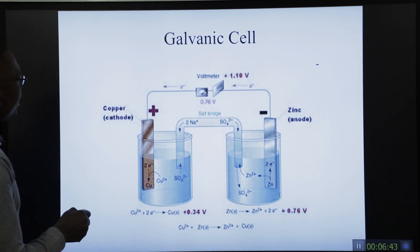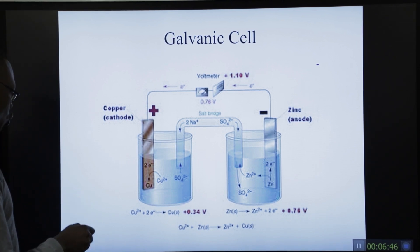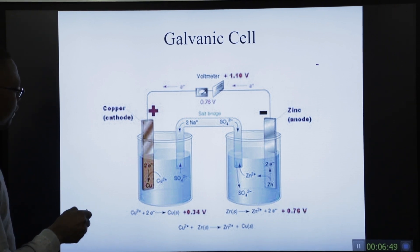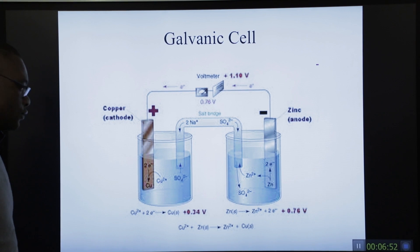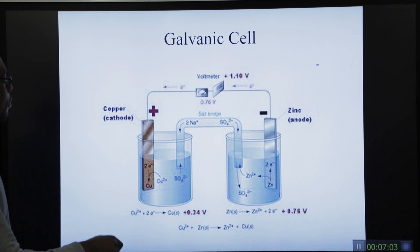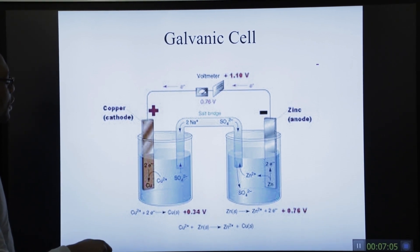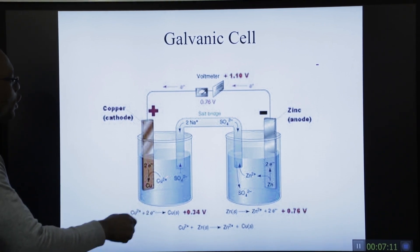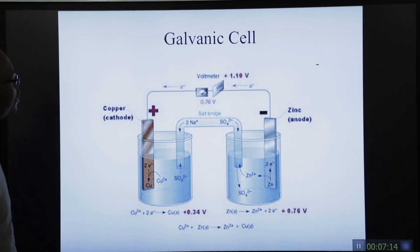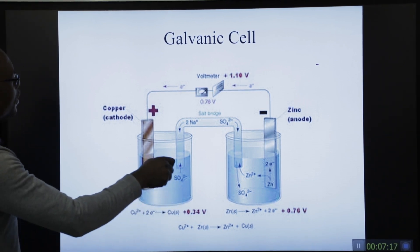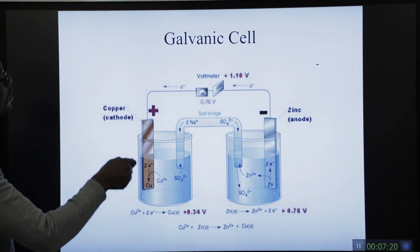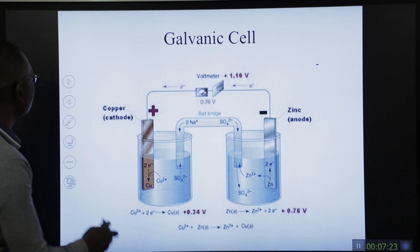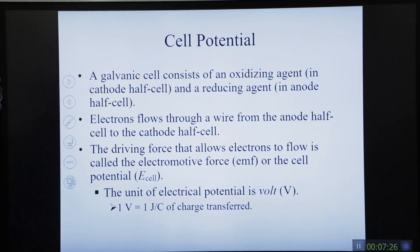In this case, copper is the cathode with a value of +0.34 V, while zinc has a value of −0.76 V. When you do the E-cell calculation, you get an overall voltage of 1.1 V as measured by the voltmeter. We will do more examples and work out voltages to see if a cell will work or not.